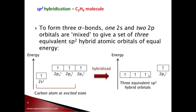The example of SP2 hybridization is the C2H4 molecule, which is the ethylene molecule. Its structure is CH2 double bond CH2. The molecule has three sigma bonds.